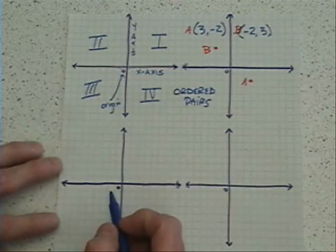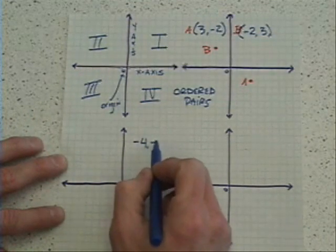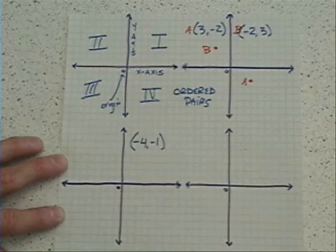Now, if we look at a couple more things, just as a quick reminder, what if I gave you the ordered pair of negative four, one?